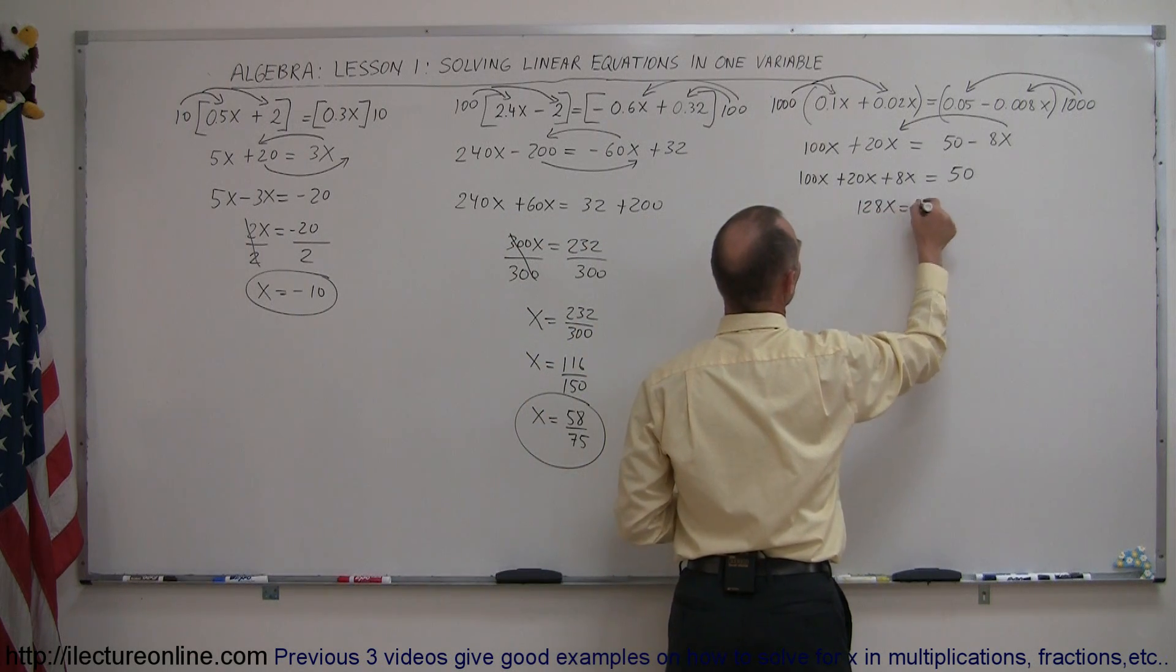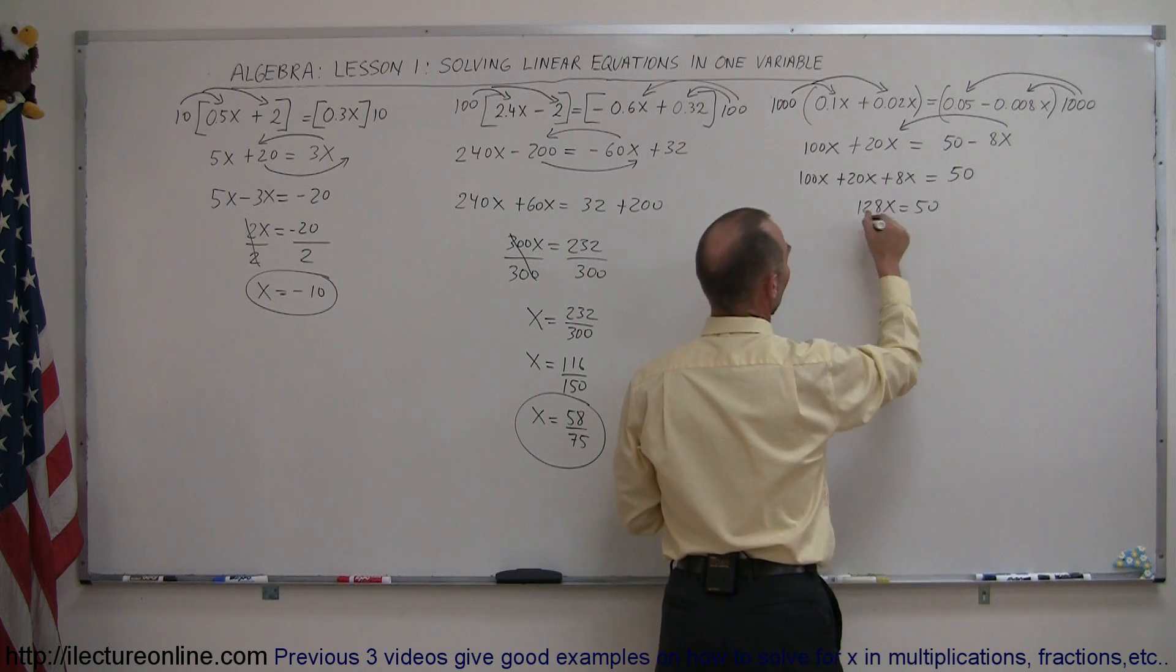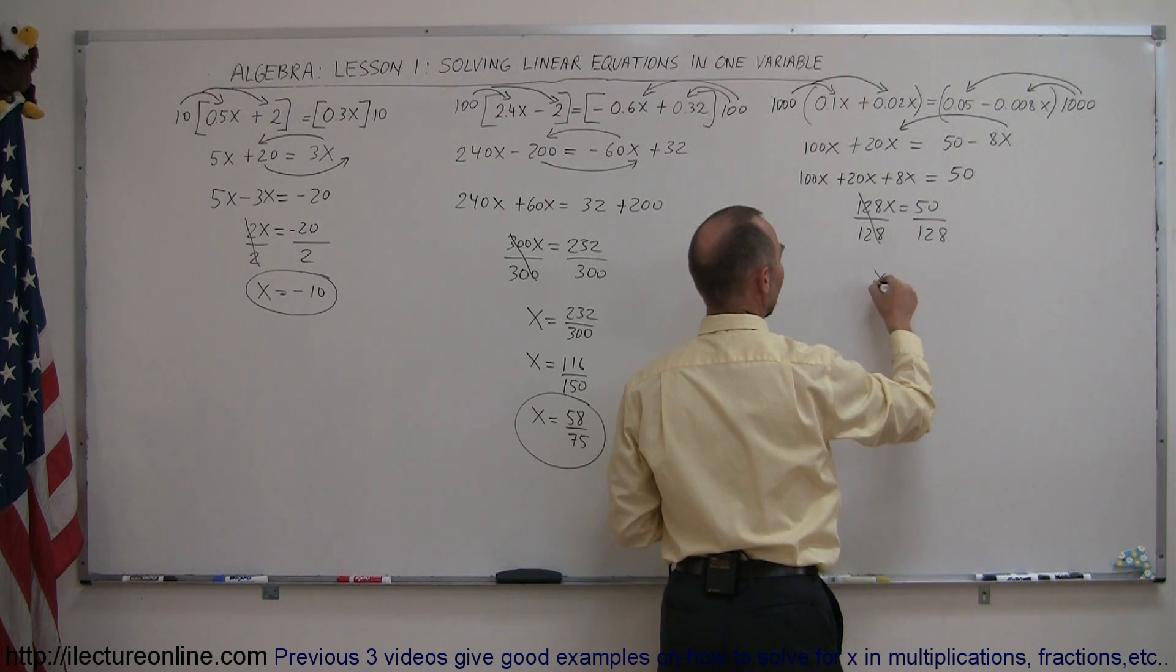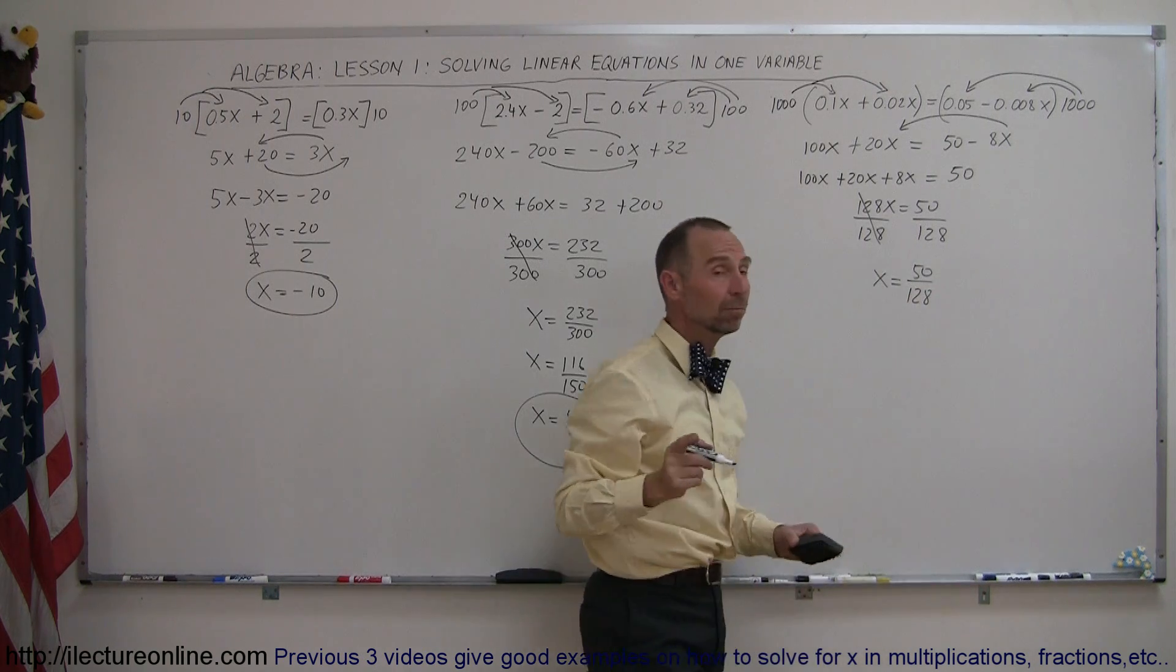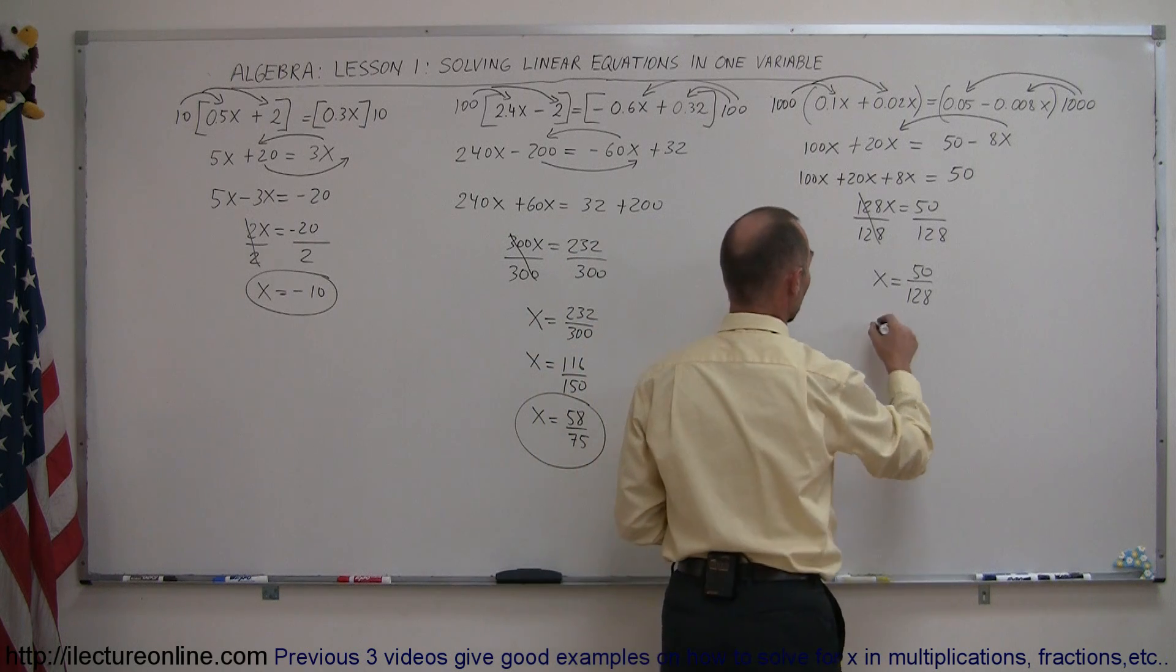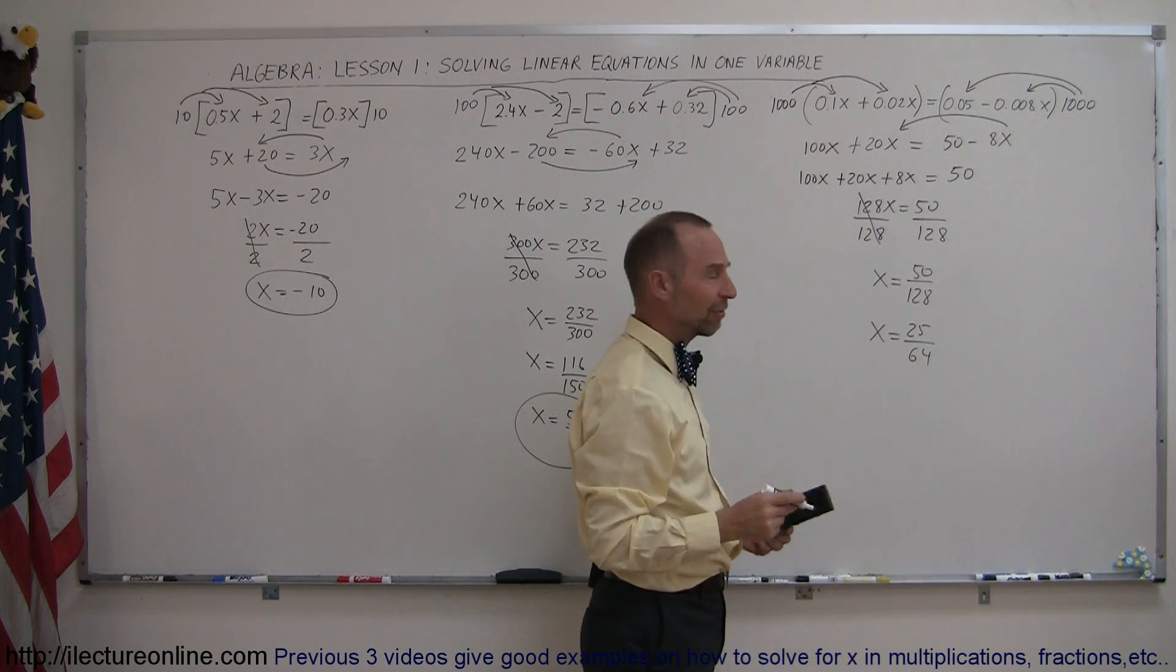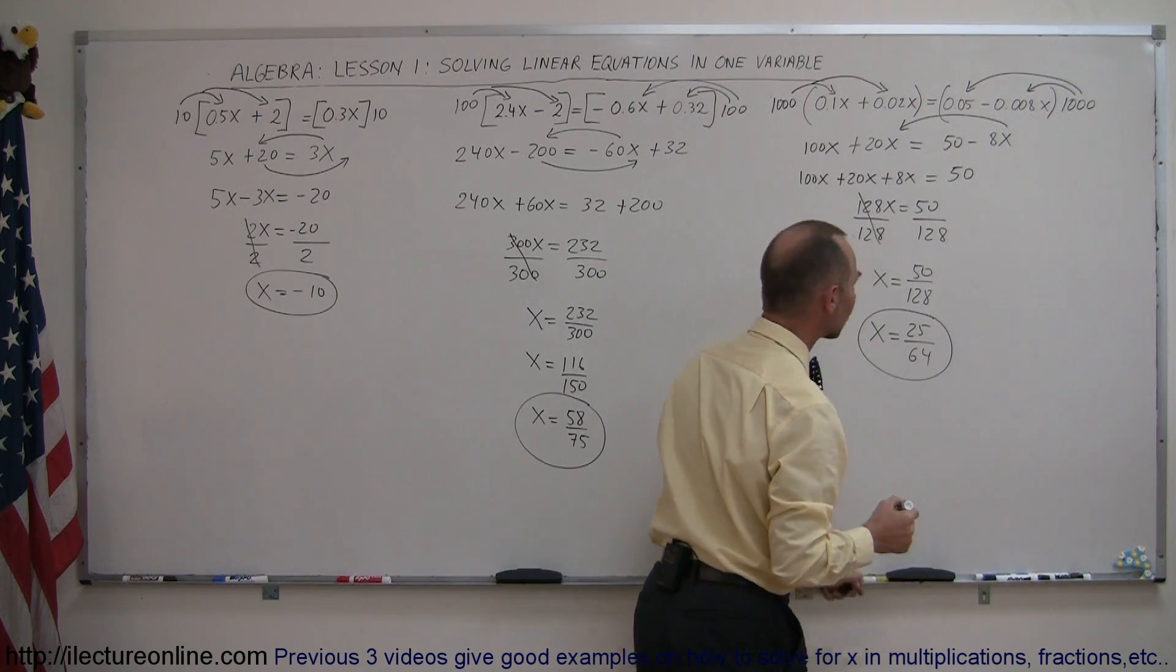So this is 128x is equal to 1,250. So x is equal to—and again, I'm getting a little lazy here, shouldn't do that—I should write that I divide both sides by the number in front of the x, like so, so you can see that that cancels out, x is equal to 1,250 divided by 128. Again, both the numerator and denominator are even, that means they can be divided by 2, so x is equal to 625 divided by 64. At this point, I don't think they have a common factor, so that's about as low as I can go, and there's the answer.